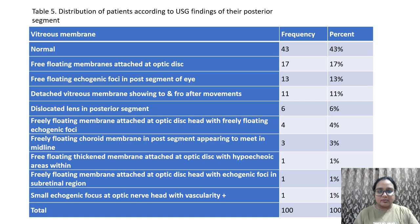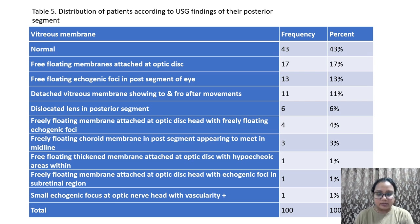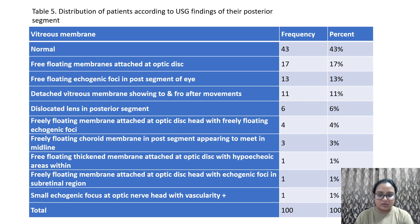Table 5 shows the distribution of patients according to USG findings of the posterior segment. The posterior membrane was normal in 43% of patients. Free floating membrane attached to the optic disc was seen in 17%. Free floating echogenic foci in the posterior segment was seen in 13%. Vitreous membrane showing to-and-fro movements was seen in 11%. Dislocated lens in the posterior segment was seen in 6%. Freely floating membrane attached to the optic disc head with freely floating echogenic foci was seen in 4%, and freely floating choroidal membrane in the posterior segment appearing to meet at the midline was seen in 3%.